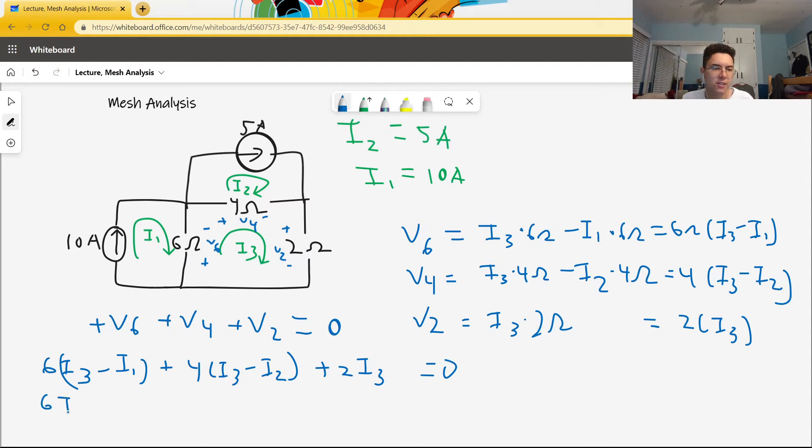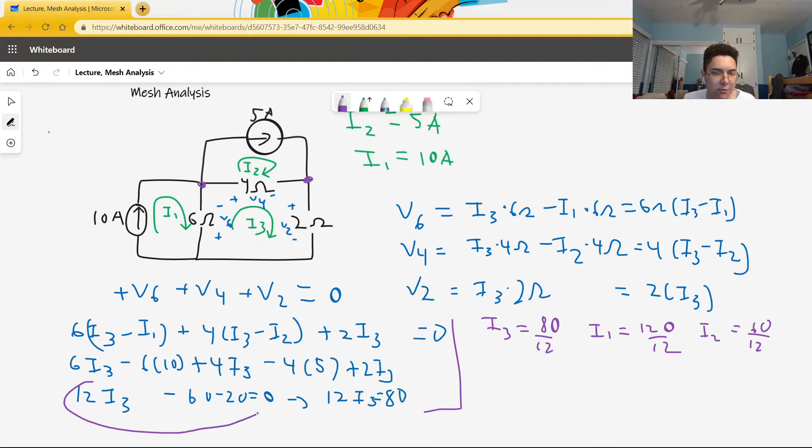We'll plug in I1 and I2 to get 6 I3 minus 6 times 10, plus 4 I3 minus 4 times 5, plus 2 I3. You can see I've distributed the 4s out and the 6s out, and I replaced I1 and I2. This results in 12 I3 minus 60 minus 20 equals 0. 12 I3 equals 80. I3 equals 80 over 12. For the purposes of the discussion, I'm going to write I1 as 120 over 12, and I2 as 60 over 12. That's just fraction changing.